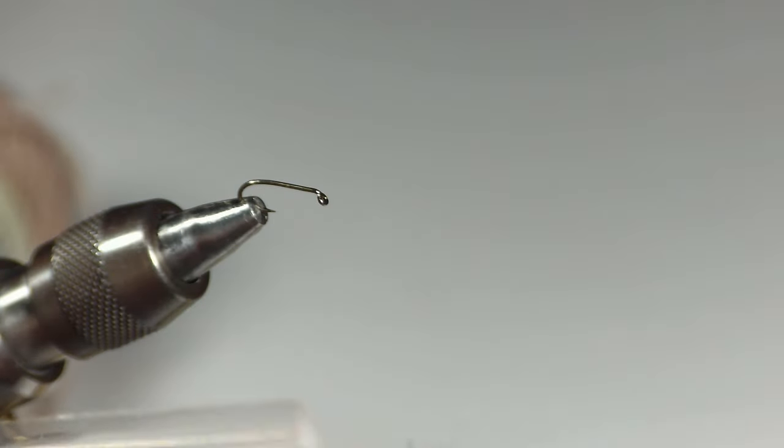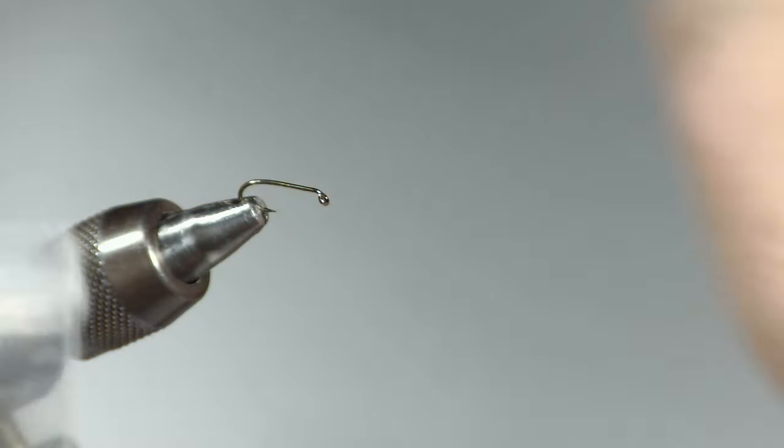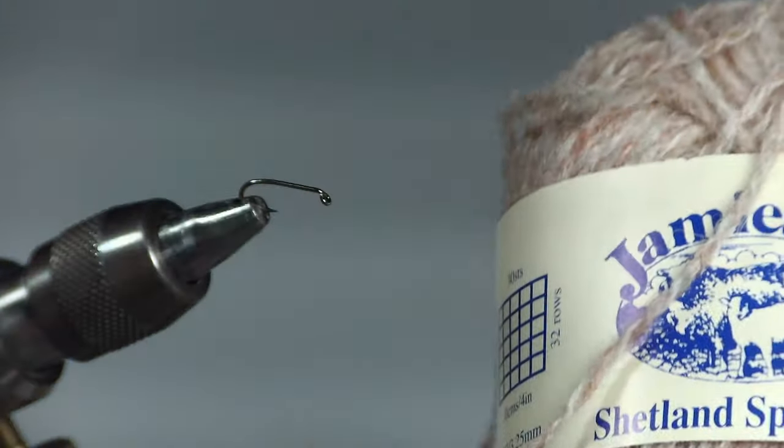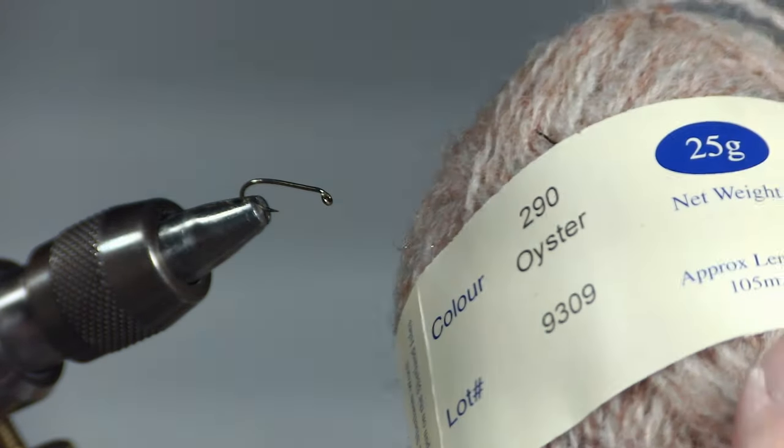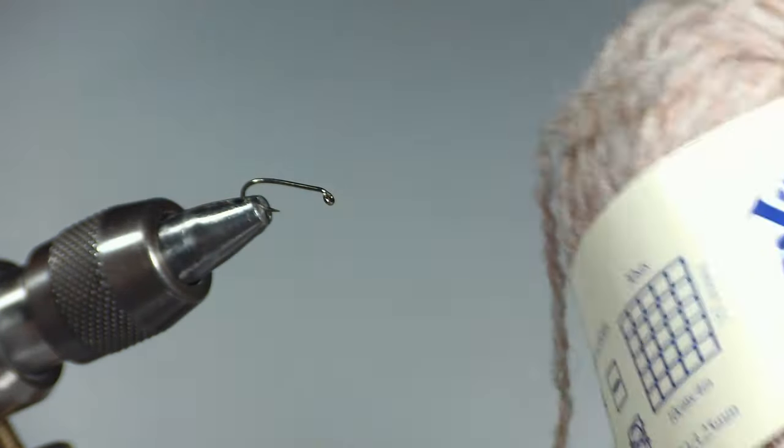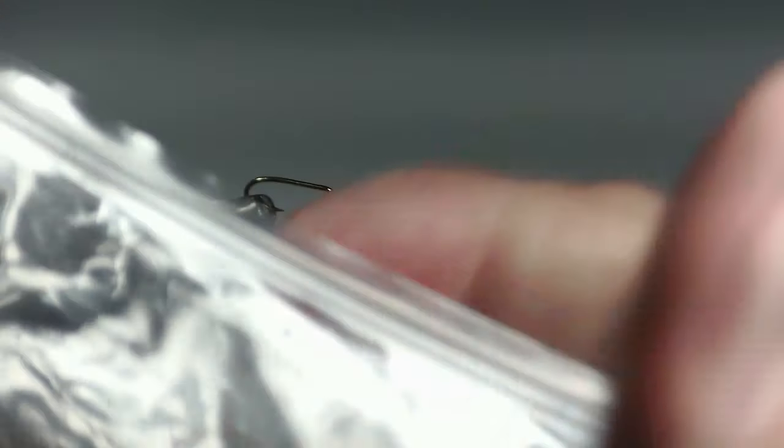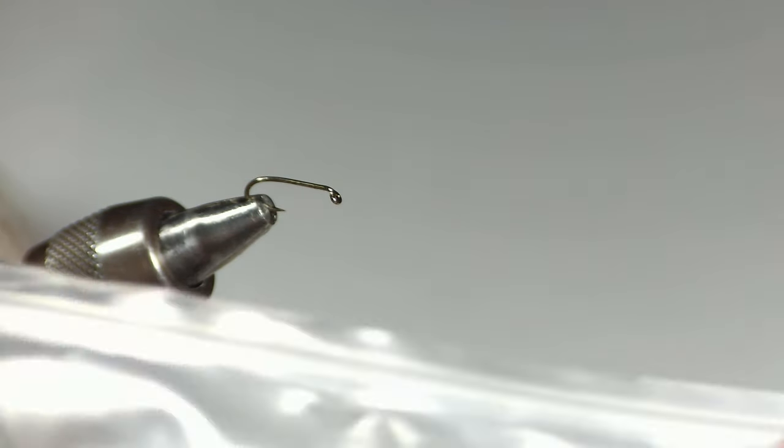And if you go research this on the internet, you'll find that a lot of people say that this Shetland spindrift, and this is oyster, that this is really close. And so if you look at this, you can see that it's pretty close. What people say about the original Chadwick's that they think makes it so effective is that when it gets wet, it shows kind of a reddish color.